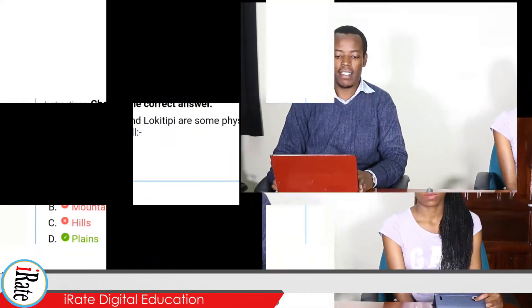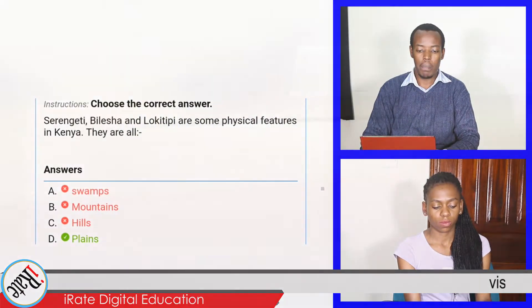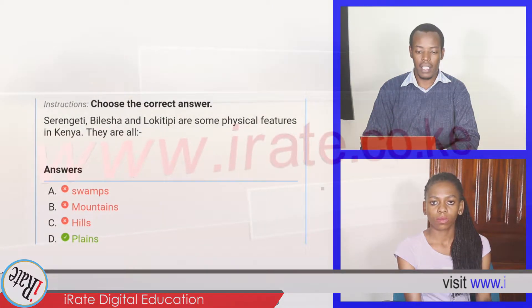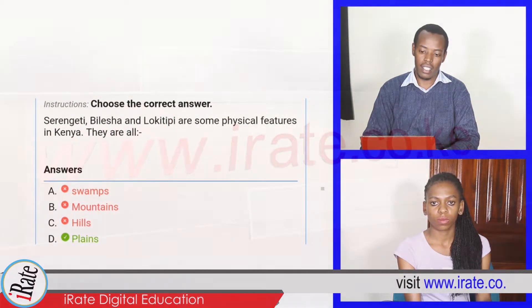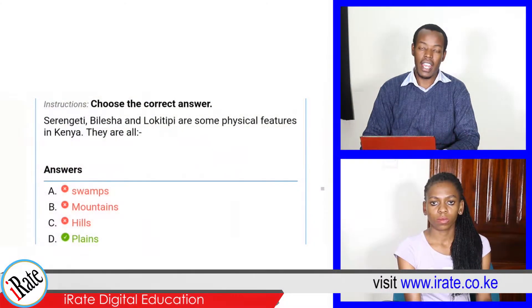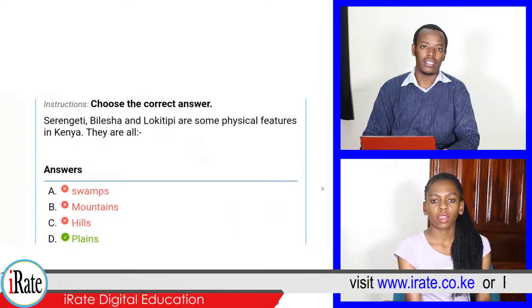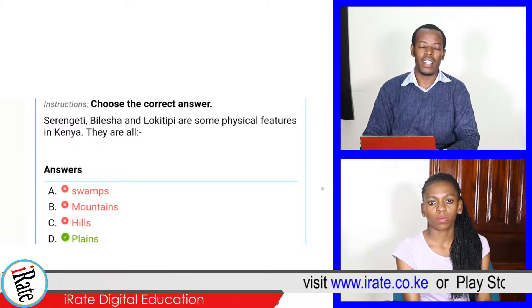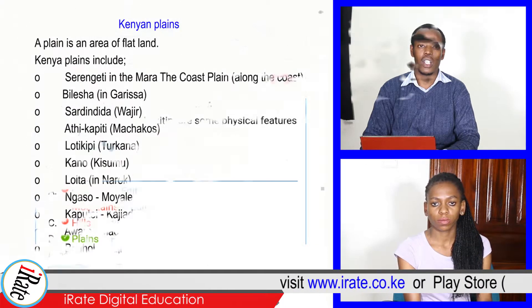Choose the correct answer. Serengeti, Bilesha, and Lokitipi are some physical features in Kenya. They are all? The answer is planes. That is correct.